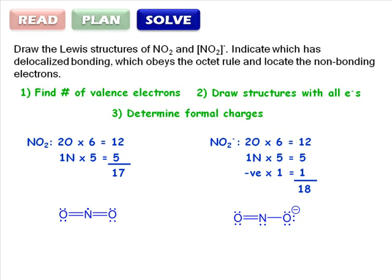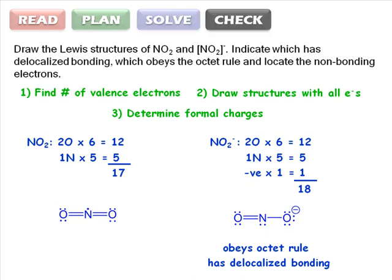So to completely answer the question, we should indicate that the second structure obeys the octet rule and has delocalized bonding. While we were drawing the first structure, we determined that it did not follow the octet rule, but before we move on to the next question, we should also check to make sure it has no delocalized bonding.